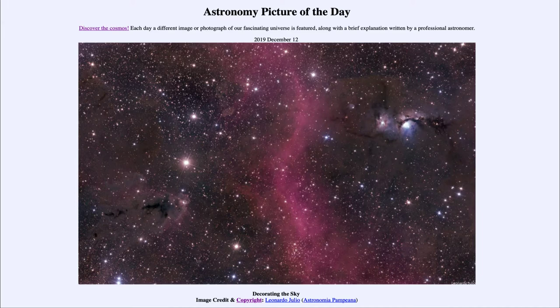That is apod.nasa.gov/apod and today's picture for December the 12th of 2019 is titled Decorating the Sky. So what do we see here? Well, this is part of the Orion region and this is the little portion north of the belt.